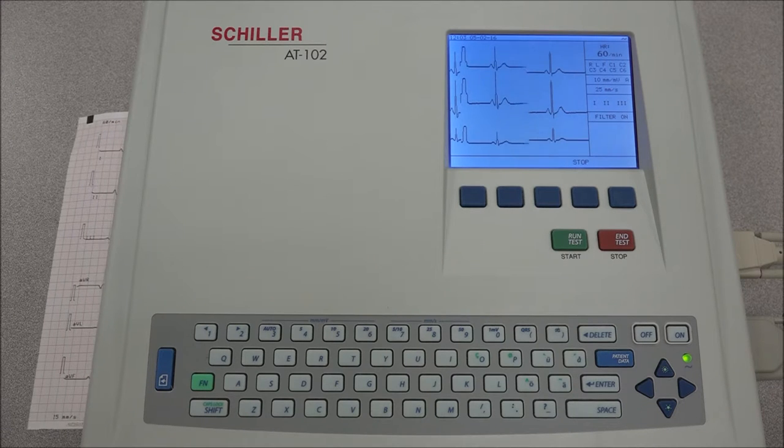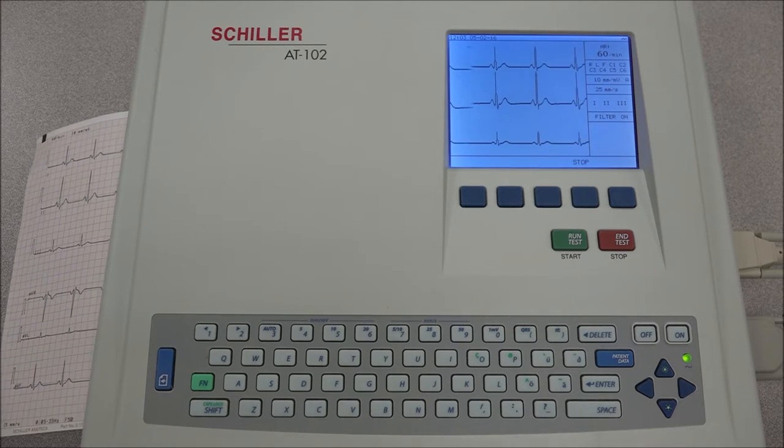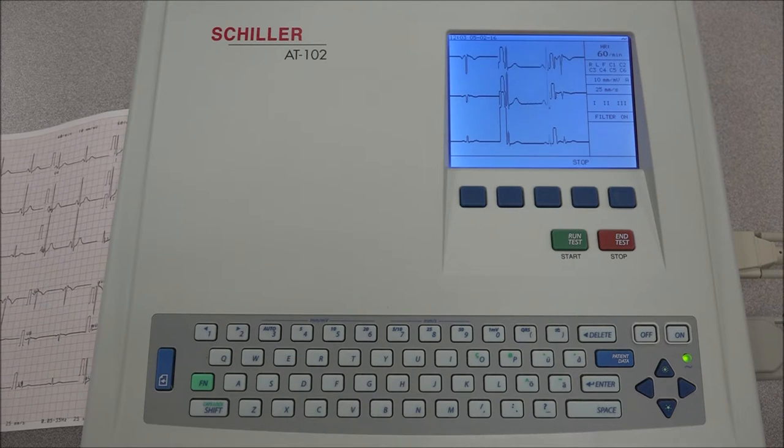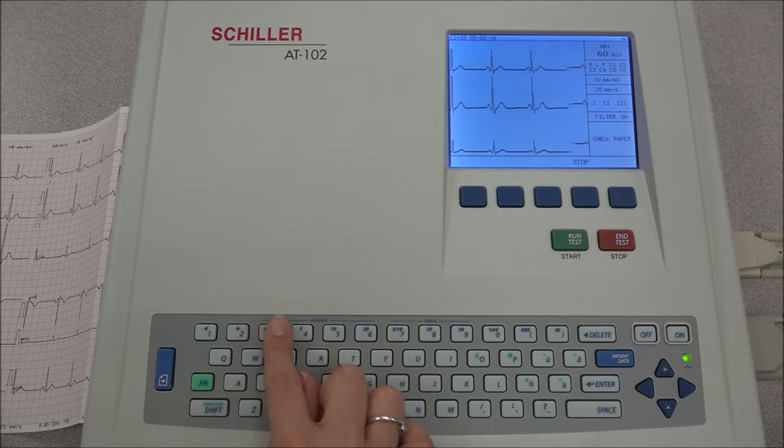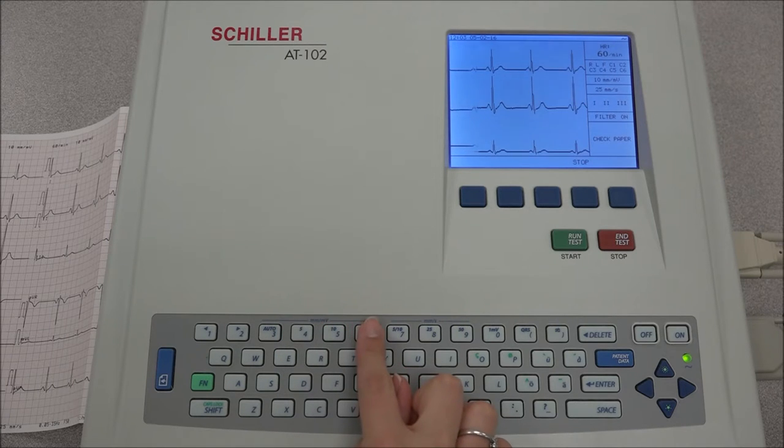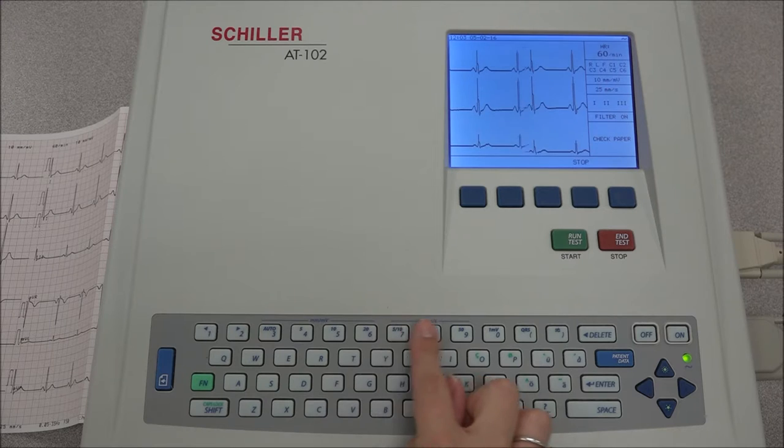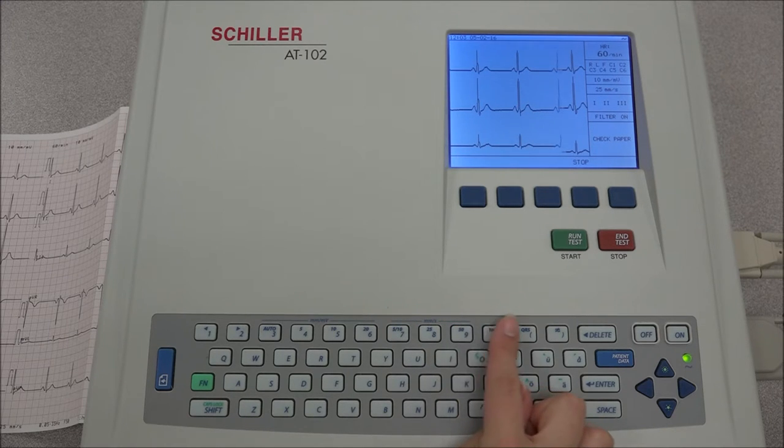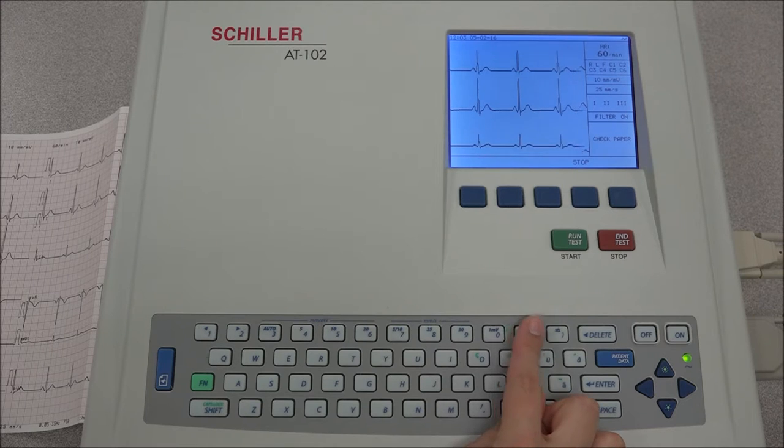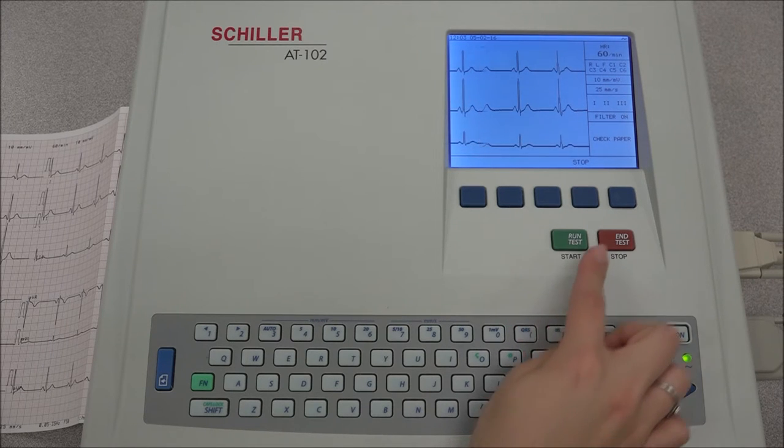During the manual recording, the leads that are observed on the screen can be changed with keys 1 and 2. Key 3 is used for automatic sensitivity. Keys 4 through 6 are to adjust the sensitivity of the ECG on the screen and on the printout. Keys 7 through 9 are to adjust the speed. The QRS key is used to enable the QRS beeper and the last key is used to turn the myogram filter on or off.